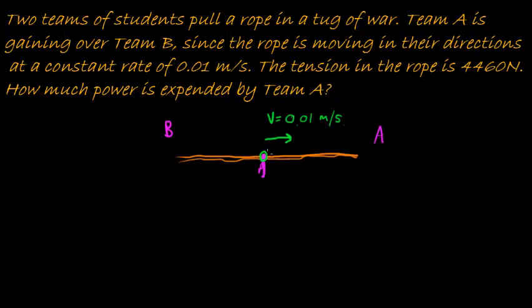And that the tension in the rope, well, tension doesn't really have direction in a rope, but tension means it's the force exerted on the rope, which means both A and B are both of them exerting the same amount of force of 4,460 Newtons in opposite directions. Why do I say both of them? Isn't Team A exerting more? No.